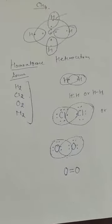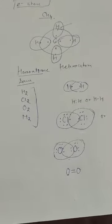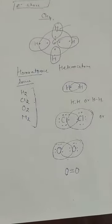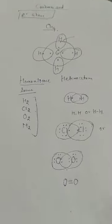This is called a homoatomic molecule — homo means same. Hetero means different, so heteroatomic molecules are formed between different atoms, like CO₂, CH₄, CCl₄, and SO₂ — these are all examples of heteroatomic molecules.